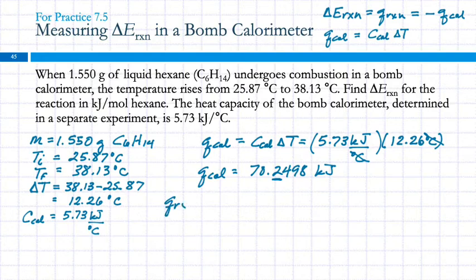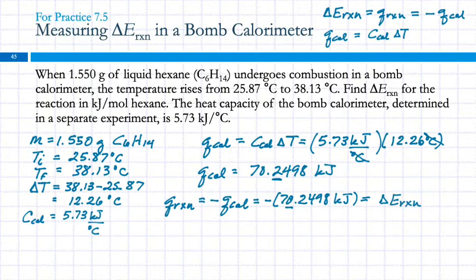Q for the reaction is negative Q for the calorimeter, so it's negative 70.2498 kilojoules. Q for the reaction is equal to delta E for the reaction because this is done at constant volume. So, is negative 70 kilojoules the answer we need? Not quite. It asks for kilojoules per mole of hexane.